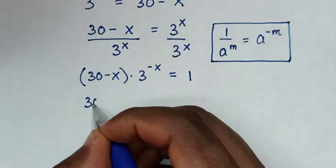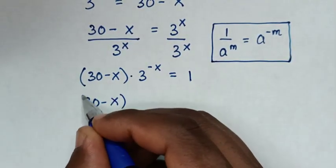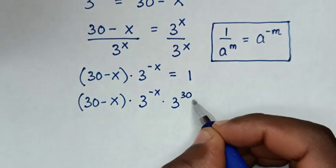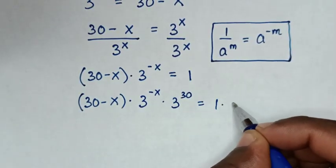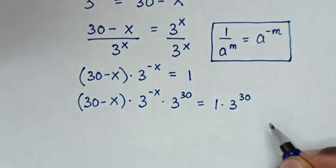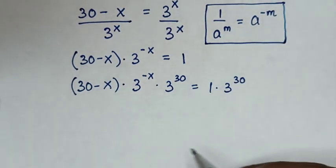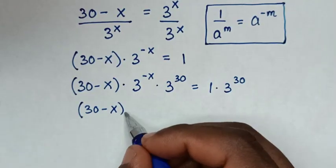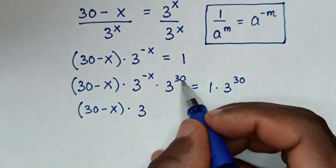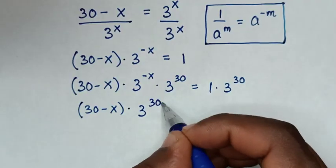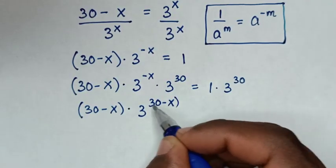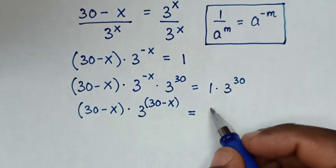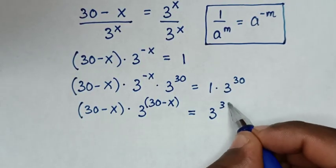Then it will be: 30 minus x bracket times 3 power of negative x times 3 power of 30 is equal to 1 times 3 power of 30. Then our equation will be 30 minus x bracket times 3 power of 30 minus x. Now this power is the same as this base, which is 3 power of 30.